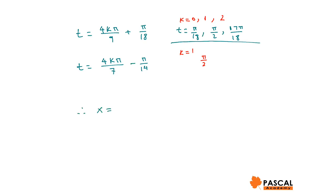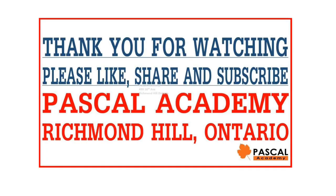This means x is cosine of π/18, cosine of π/2, or cosine of 17π/18. Thanks for watching.